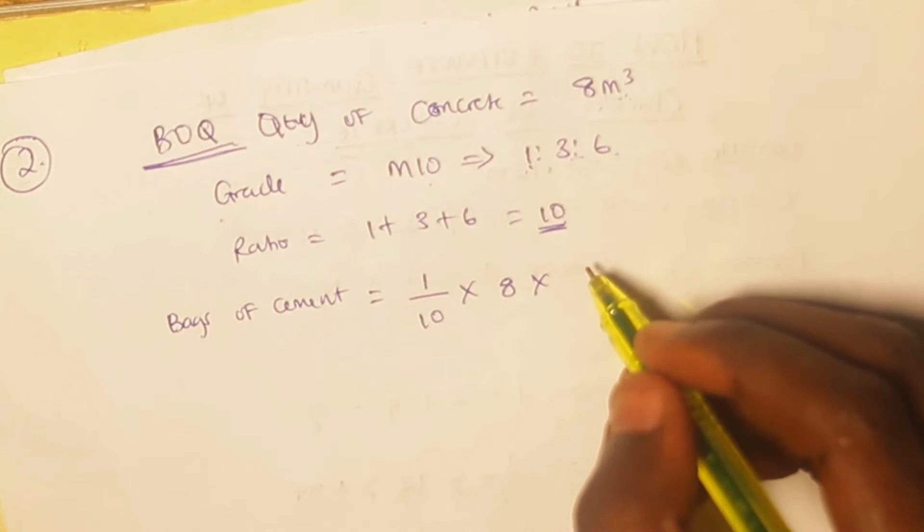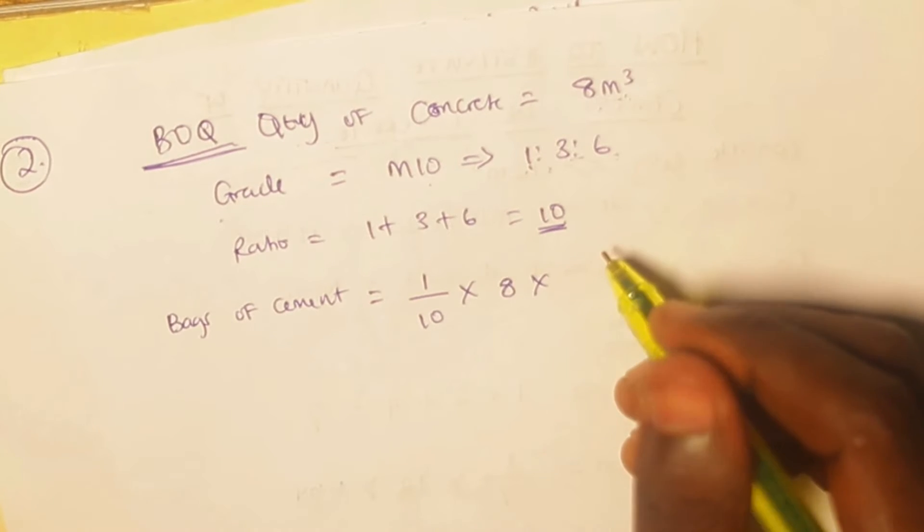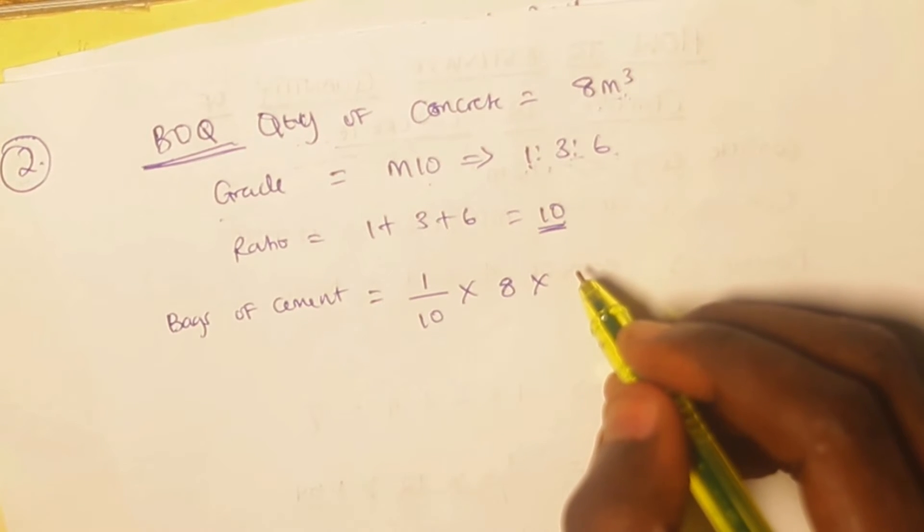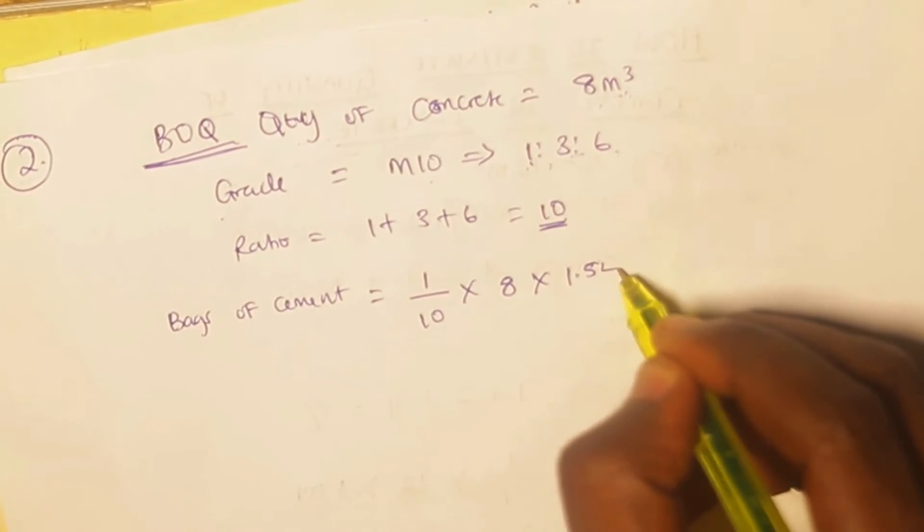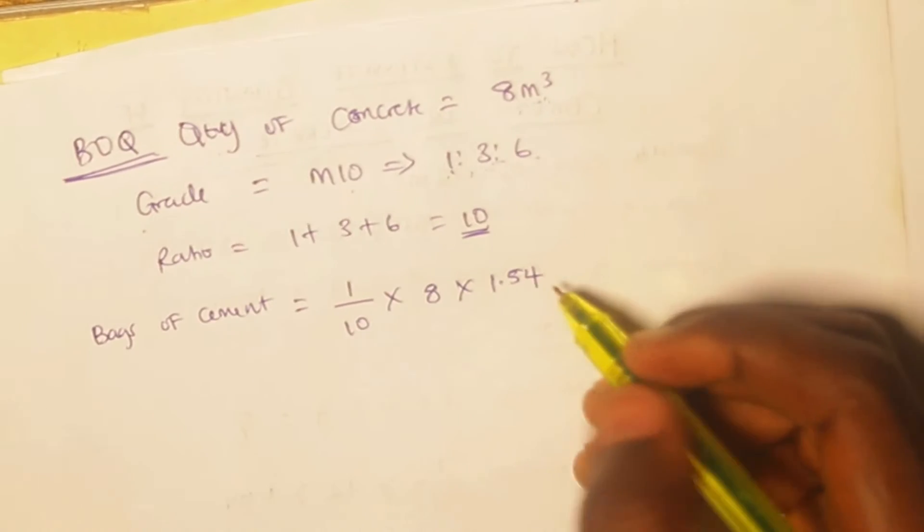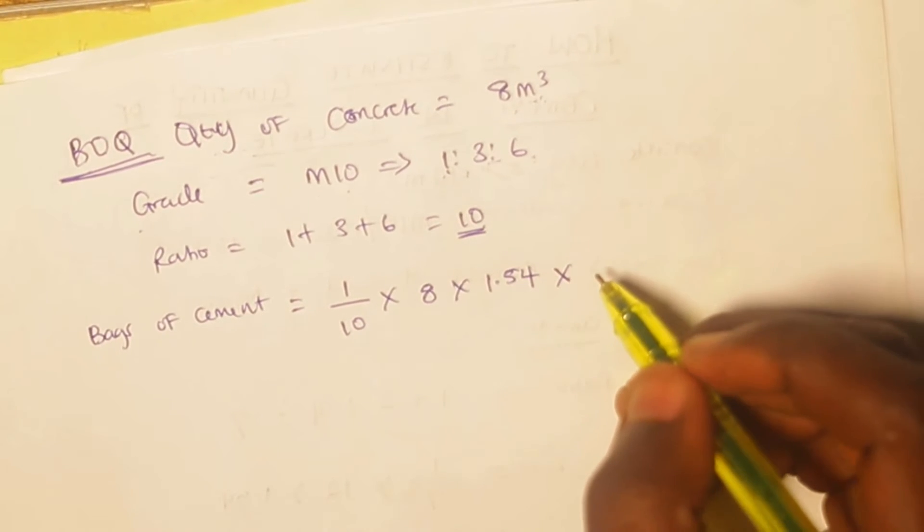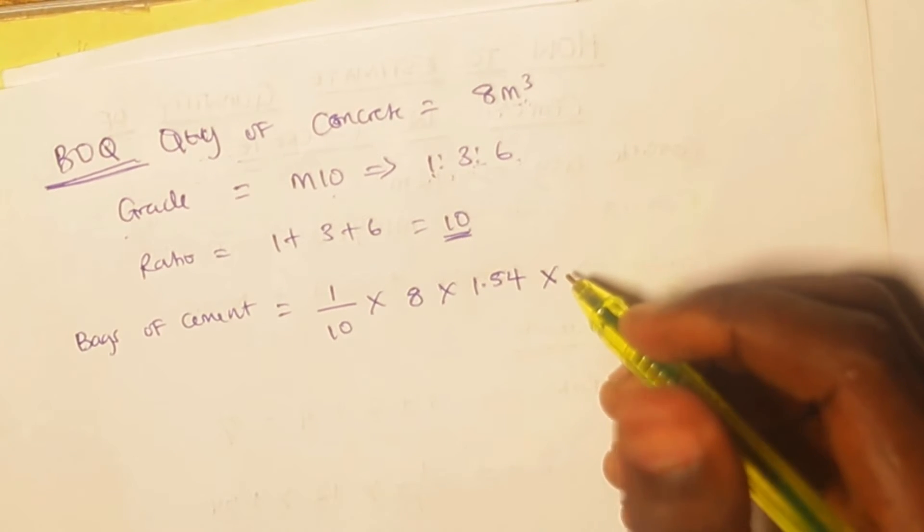Remember the constant I told you that would always be included in your calculation, which is going to take care of the decrease in the volume of concrete when water is added. So the adjustment for wet concrete is 1.54. I've explained it earlier on in this video.